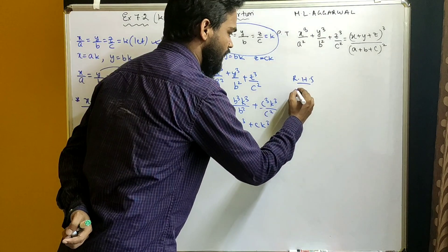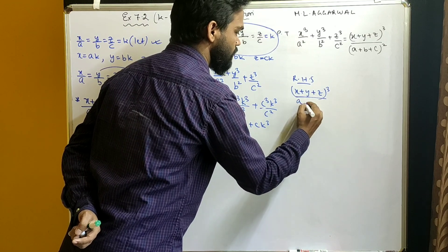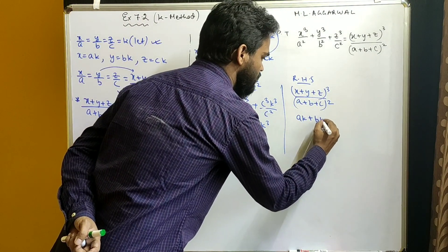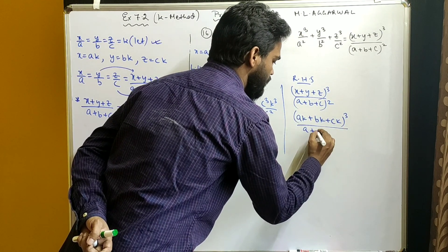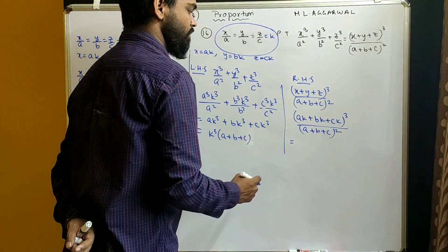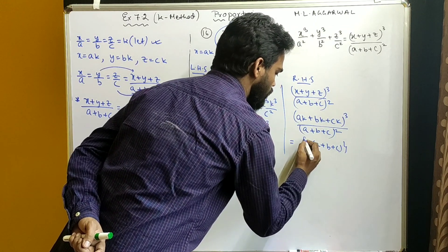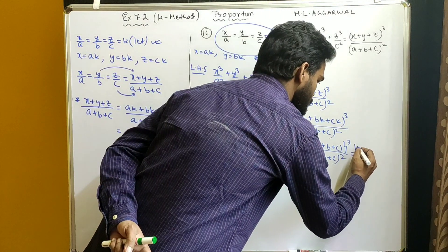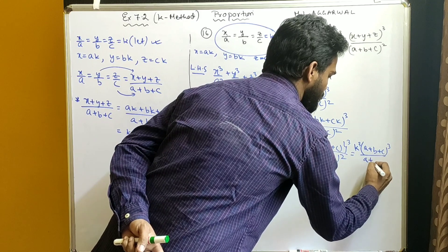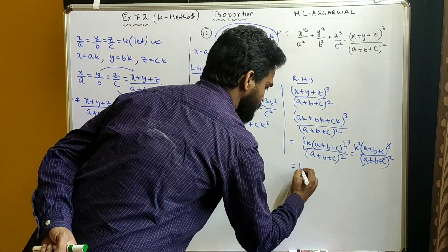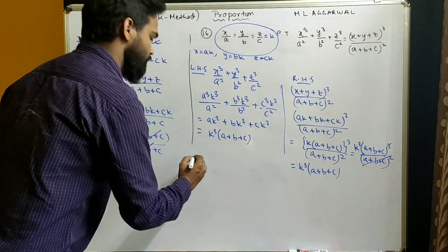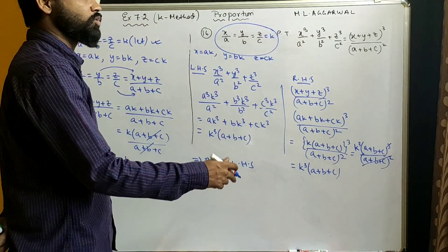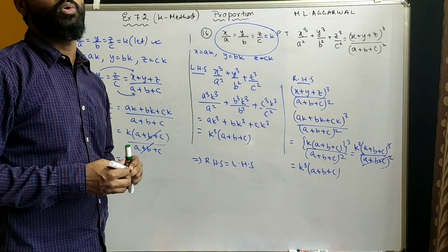Now solving the RHS, which is (x+y+z)³/(a+b+c)². Substituting x = ak, y = bk, z = ck, we write (ak + bk + ck)³/(a+b+c)². Taking k common in the numerator gives k³(a+b+c)³/(a+b+c)². After cancellation, this becomes k³(a+b+c). So RHS equals LHS, proving that x³/a² + y³/b² + z³/c² = (x+y+z)³/(a+b+c)².